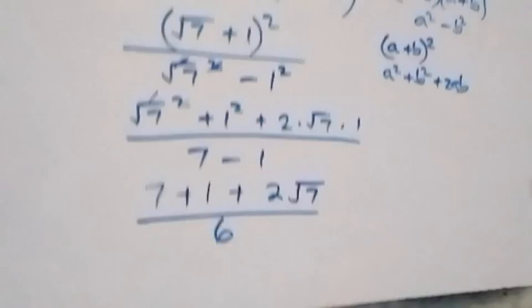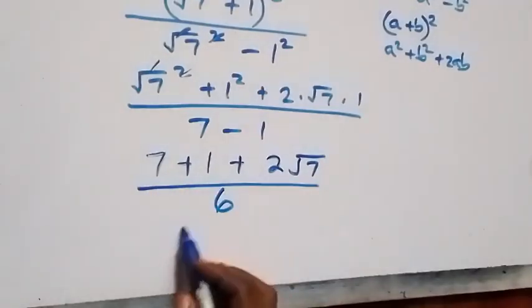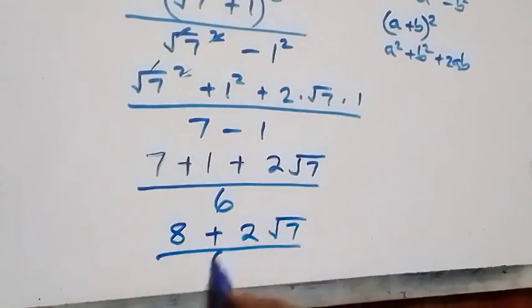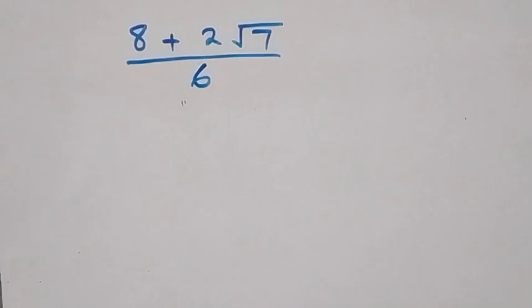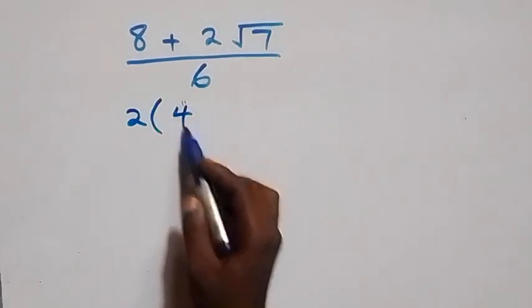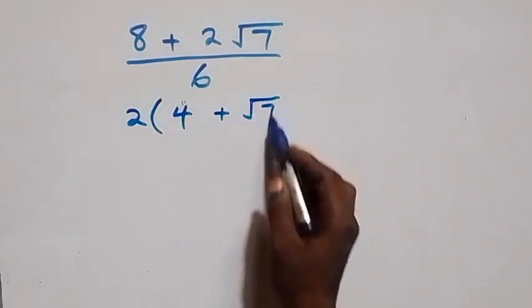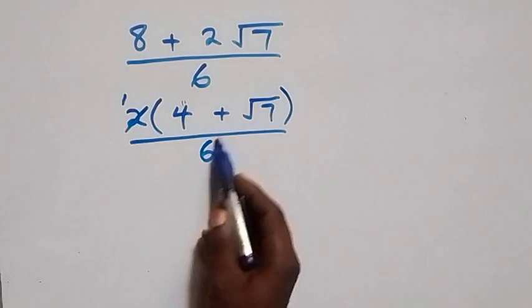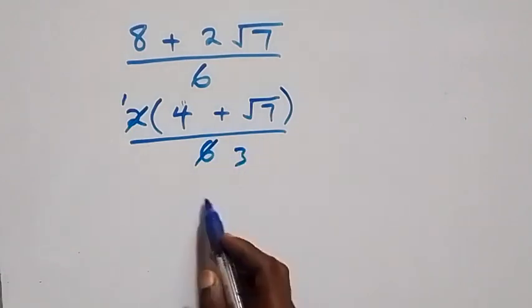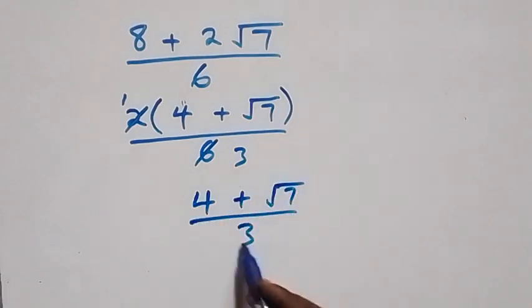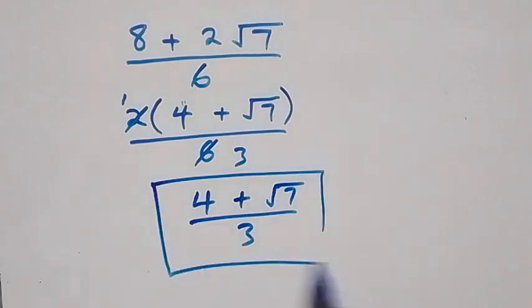Which implies 7 + 1 = 8, plus 2√7, over 6. Here 2 is common, so we factor it out: 2 × (4 + √7) over 6. Then 2 goes into 6 three times, so that all we have left is (4 + √7) over 3. That is the solution to this problem by the first method.